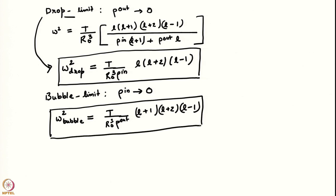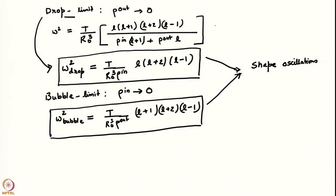Note that these are shape oscillations — there is a change in shape but at linear order there is no change in volume. In the case of bubbles, volume oscillations are also possible when the gaseous medium behaves as a compressible medium inside. These dispersion relations govern shape oscillations, not volume oscillations.